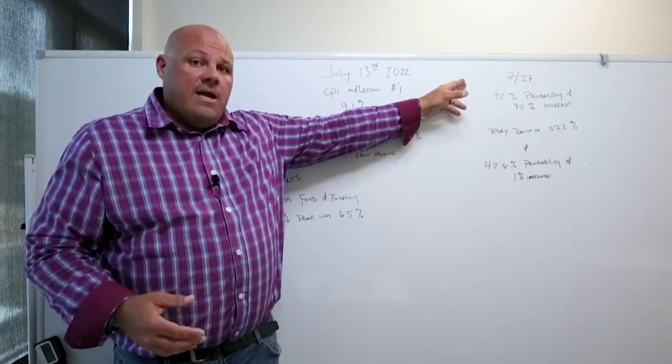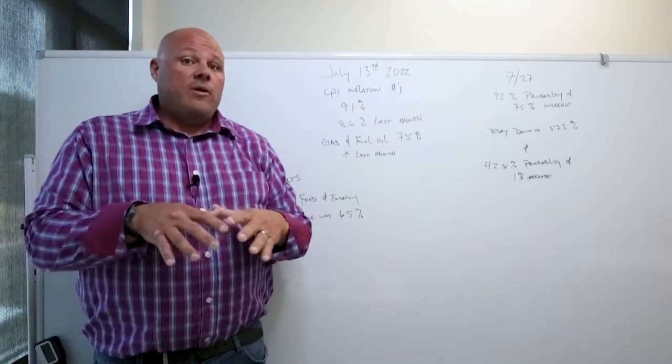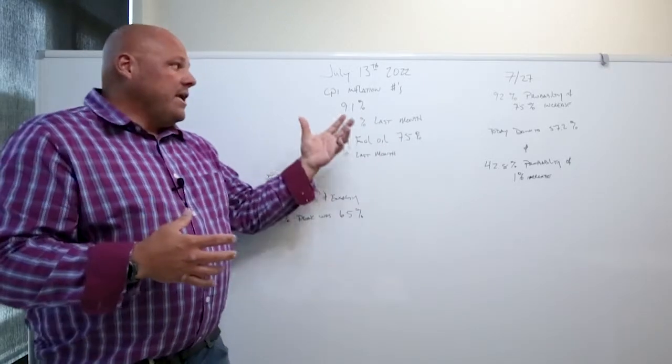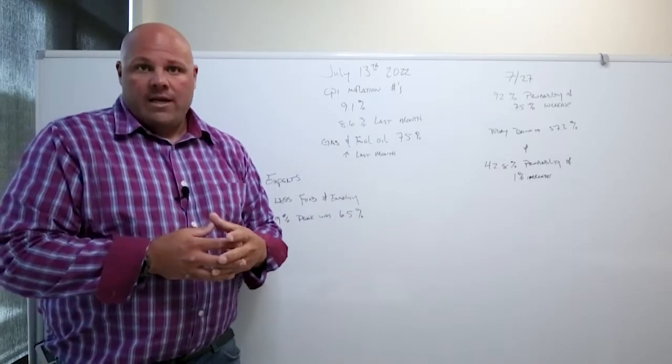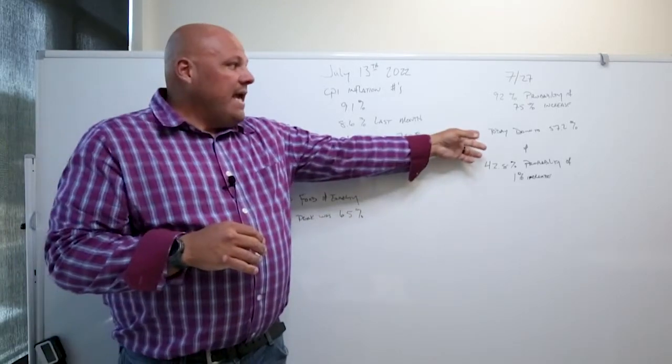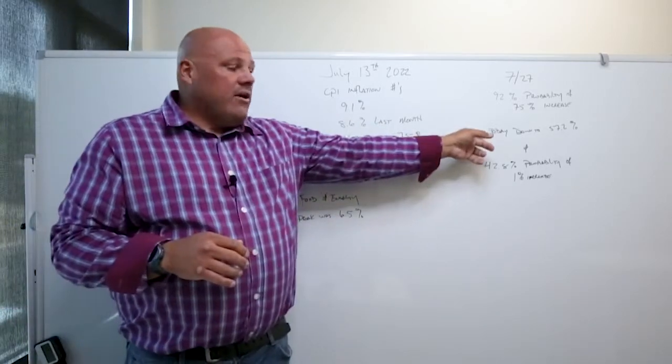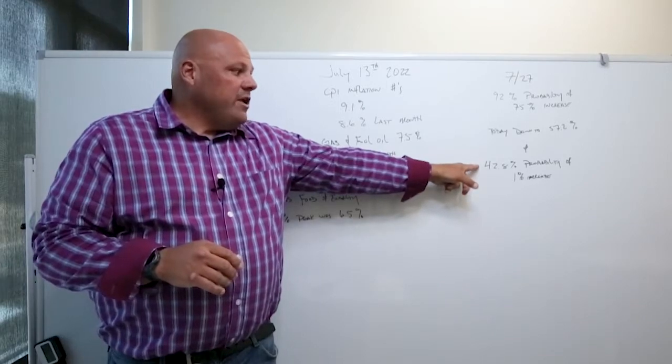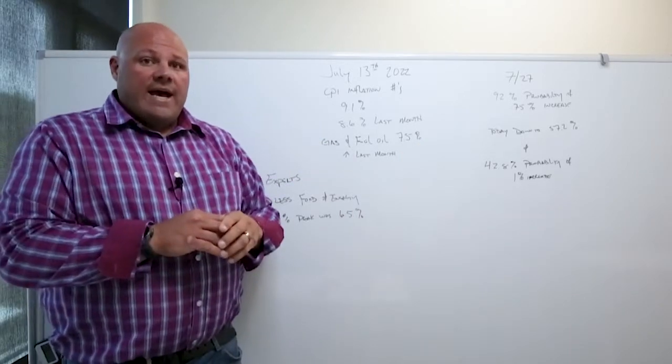When the Fed does their meeting on the 27th of this month, as of yesterday there was a 92% probability that they would do a 0.75% increase. Again, the media is going to say the Fed's going to increase rates three-quarters of a point on their Fed funds borrowing rate. Today, when they announced these numbers, that went down to a probability of 57.2%, and there's now a 42.8% probability that they'll raise at 1%. Here's what I think is going to happen.